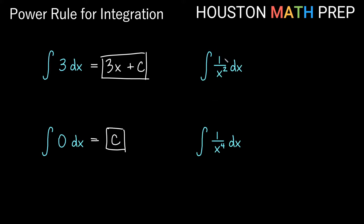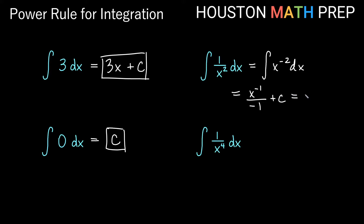We have the integral of one over x squared dx. We can think of this as a power rule — this is really x to the negative two dx. The power rule applies: add one to the power, giving x to the negative one. Dividing by that new power gives us divide by negative one plus c. Cleaning up, that's negative x to the negative one, which written as a fraction is negative one over x plus c — the preferred way to write it without negative exponents.